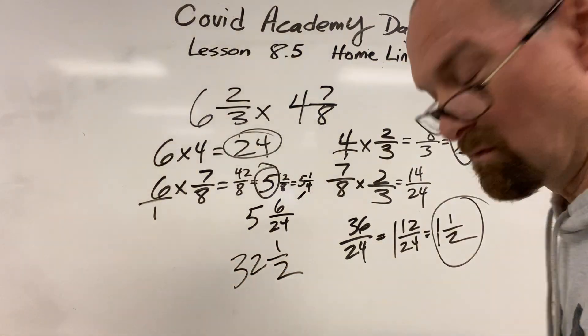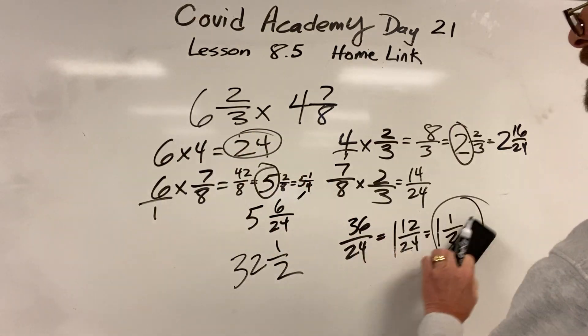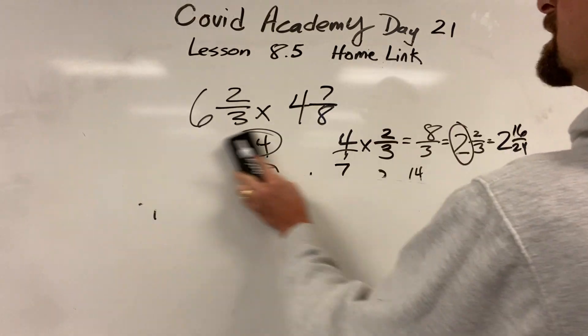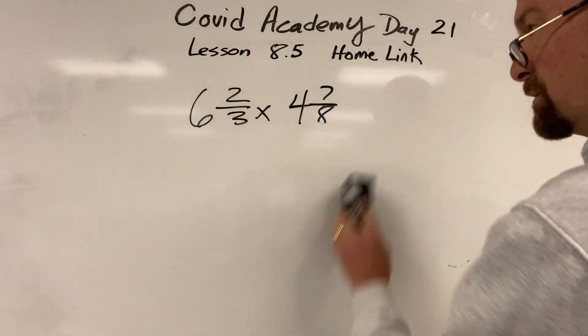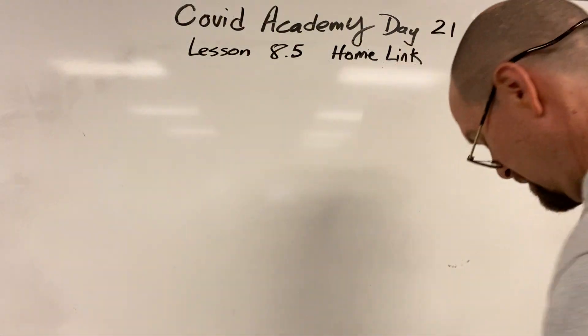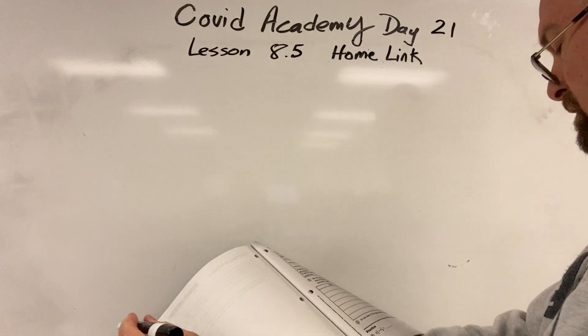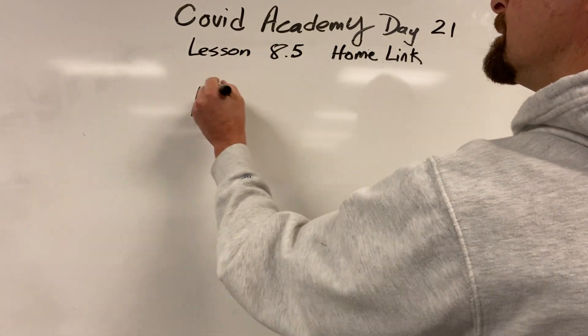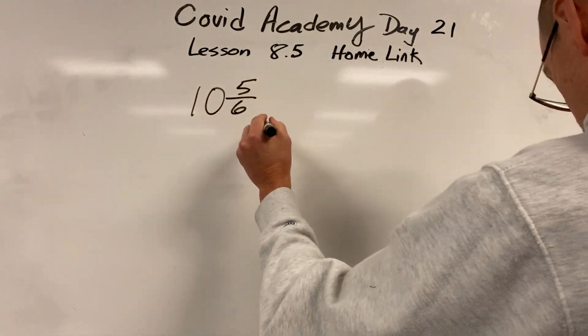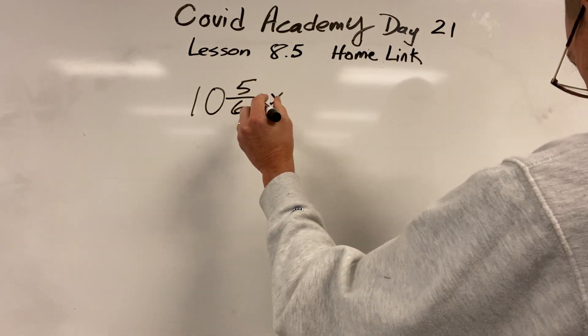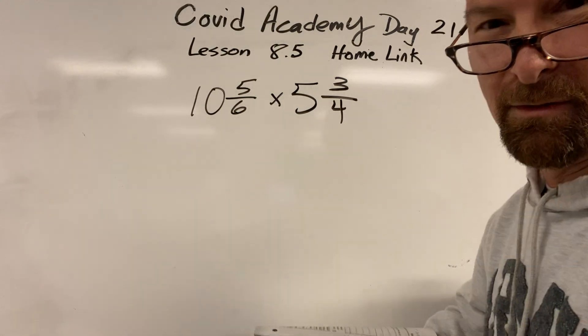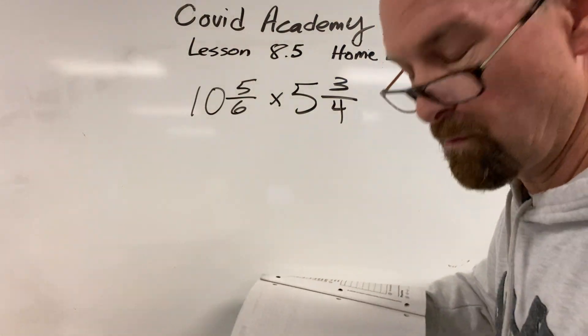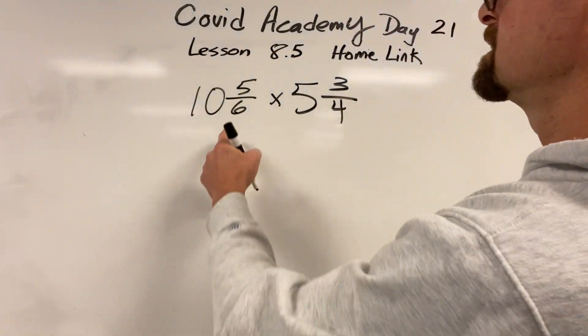Dude, that was a lot of work for that one. I'm not sure that doing the four problems was the way to go. The other way you can do it is you can make this improper and that improper. You just end up with big numbers to deal with. So either way, it's not so easy. Let's do this one. Ten and five-sixths times five and three-fourths. Since we did the other one, the more complicated four-problem way, let's do this one with impropers. Let's see what happens.